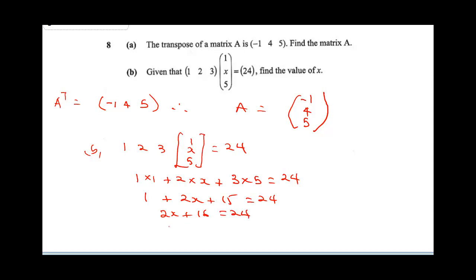Collecting our like terms, 2x is going to be 24 minus 16. 2x is going to be 8, therefore, our x is going to be 8 over 2, and that will give us 4.